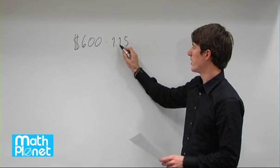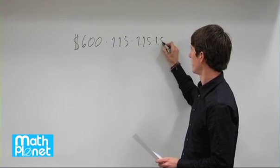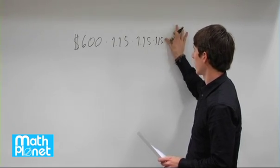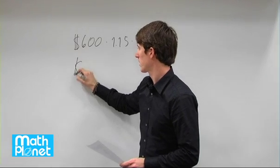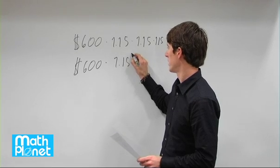This number is multiplied three times: 1.15, and then 1.15. We can write this as 600 times 1.15 to the power of 3.